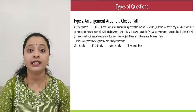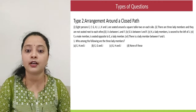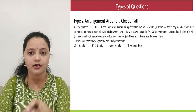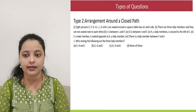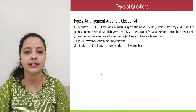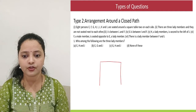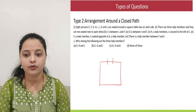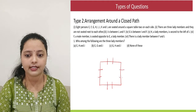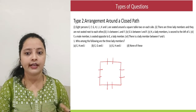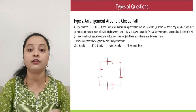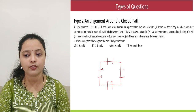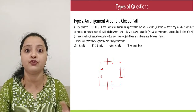Let's move to the second type — making people sit around a closed path. Generally it is a circular arrangement, but here we have a different question where it is a square table. They say 8 people are seated around a square table. Let's draw a square table and place 2 people on each side, giving us positions 1 through 8. Since they haven't told us whether people are facing towards or away from the center, it's good practice to take everyone facing towards the center — it's the most convenient approach so you won't get confused about left and right.